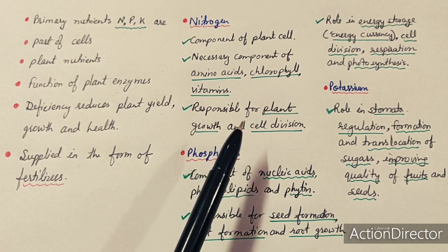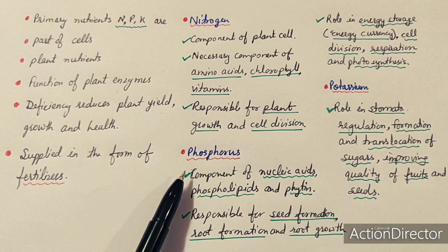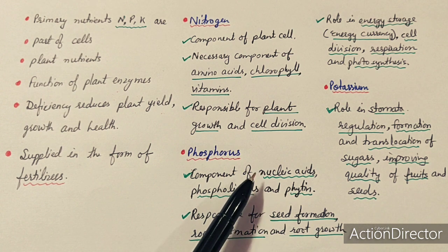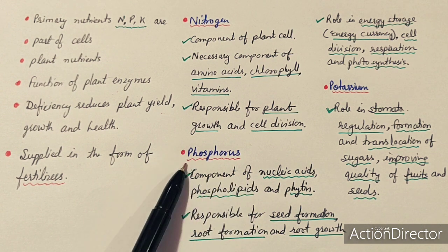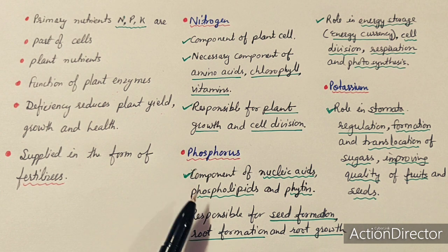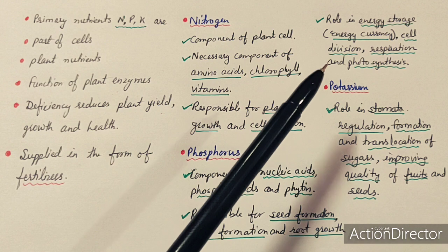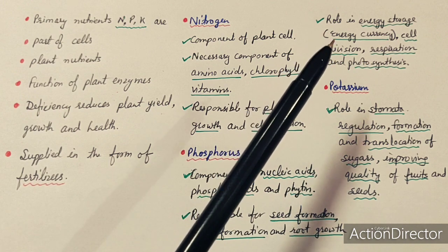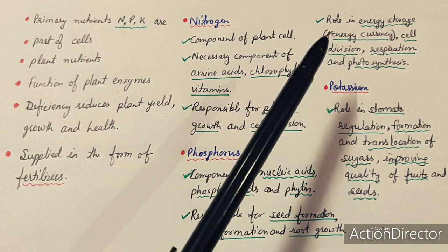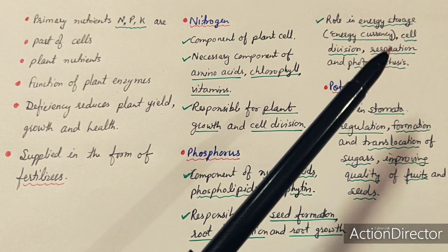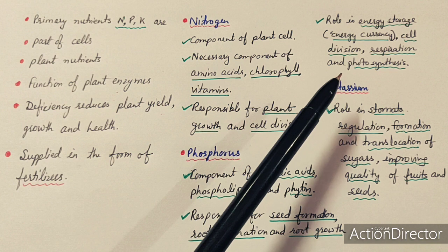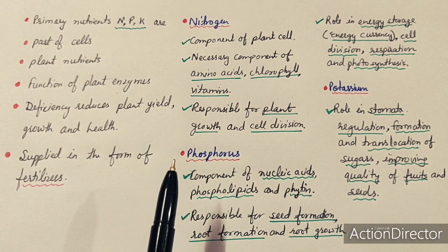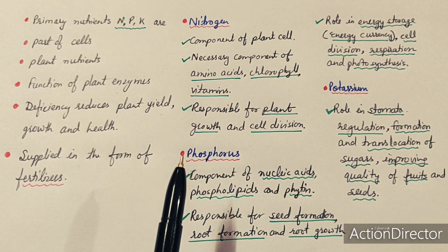Nitrogen is responsible for plant growth and cell division. Phosphorus is the component of nucleic acids, phospholipids, and phytin. Nucleic acids form DNA and RNA. Phosphorus is also an important part of ADP and ATP (adenosine diphosphate and adenosine triphosphate), which are responsible for energy storage — hence phosphorus is also called the energy currency. It participates in cell division, respiration, and photosynthesis.